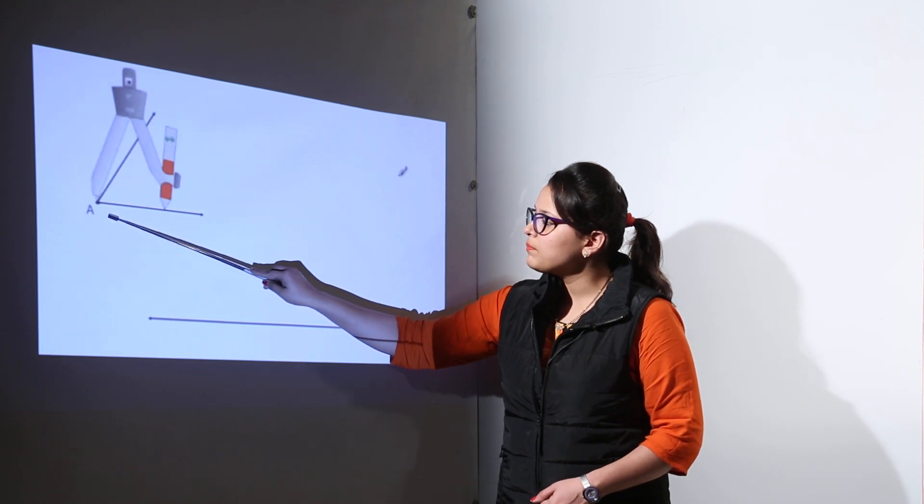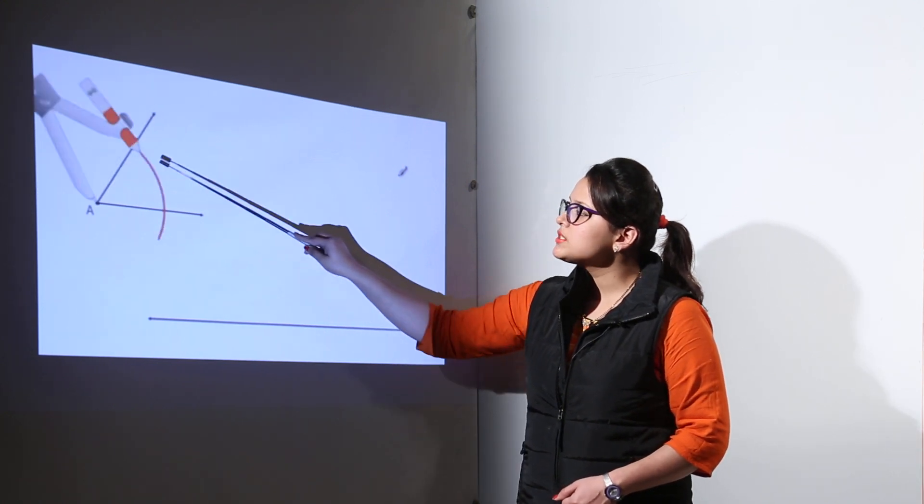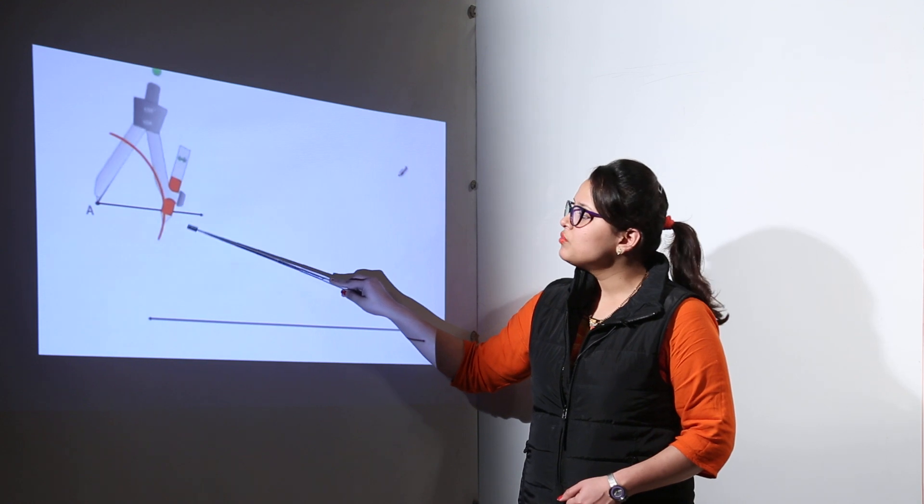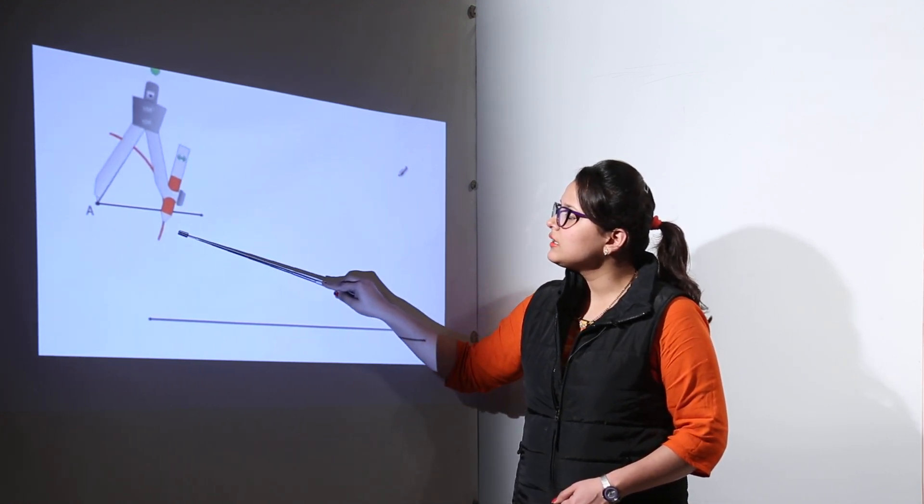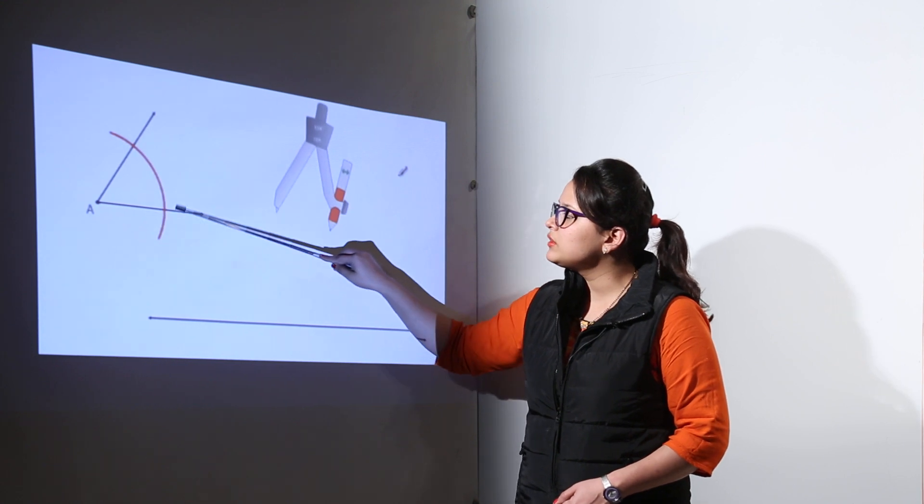Place your compass on A point and with compass of any radius, you make an arc on the angle. The arc is cutting the angle at two different points.